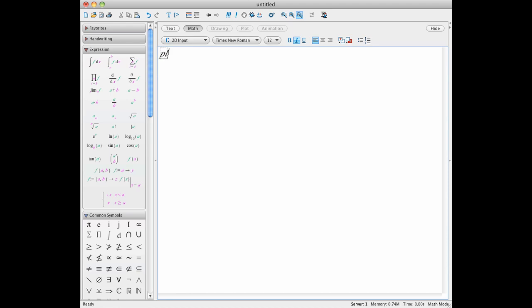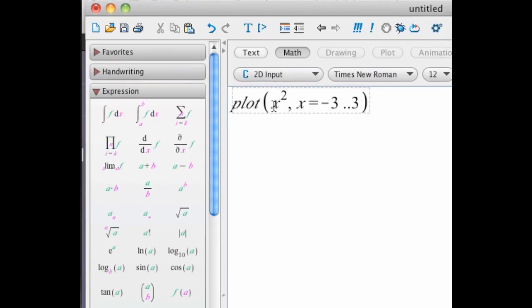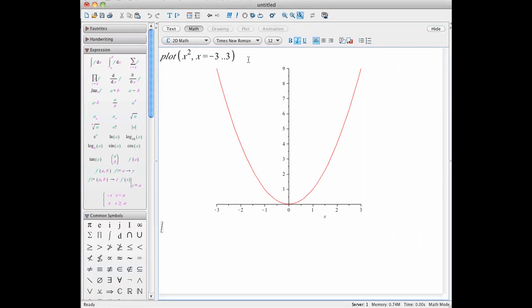Here's a reminder of how you plot a function of one variable. You use the plot command. A couple things to notice here. First off, there's a comma between your function and the range of values you're interested in. And we use this dot dot notation here to talk about a range of numbers. So we're plotting x squared from negative three to three. Yay, it's a parabola.